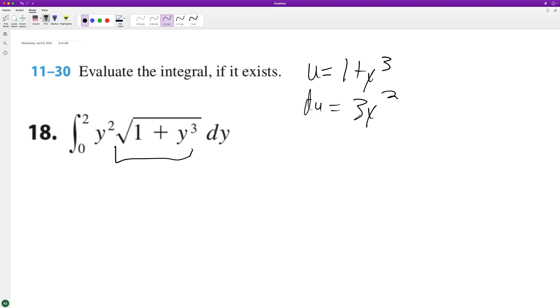3y squared. And if you see on the outside here we only have y squared, so to get du equal to dy we need to multiply it by one-third. So one-third from 0 to 2, and then this will